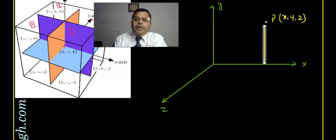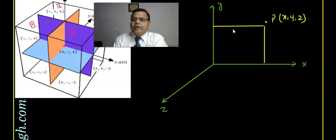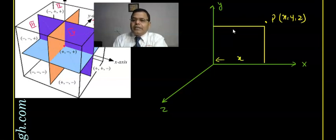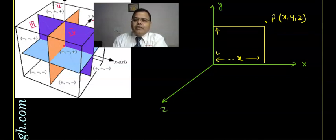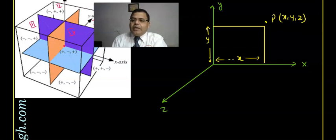The x-coordinate is the distance along the x-axis, the y-coordinate is the distance along the y-axis, and the z-coordinate is the distance along the z-axis. So: x-coordinate is distance along x-axis, y-coordinate is distance along y-axis, and z-coordinate is distance along z-axis.